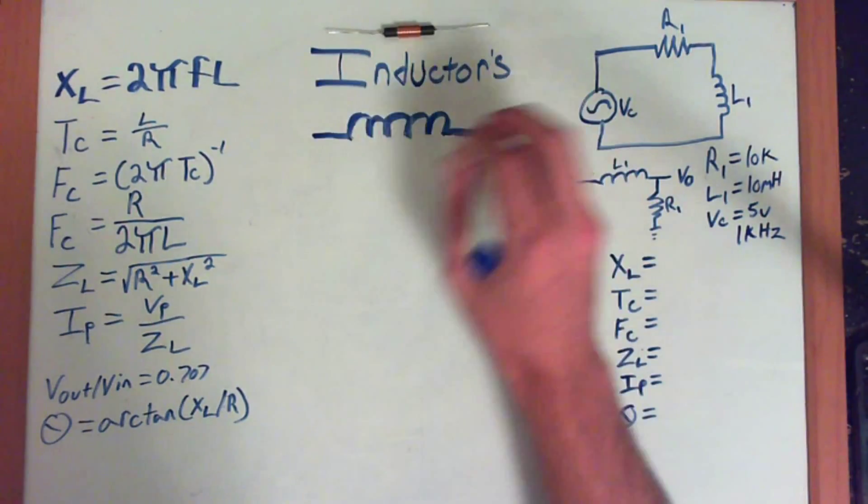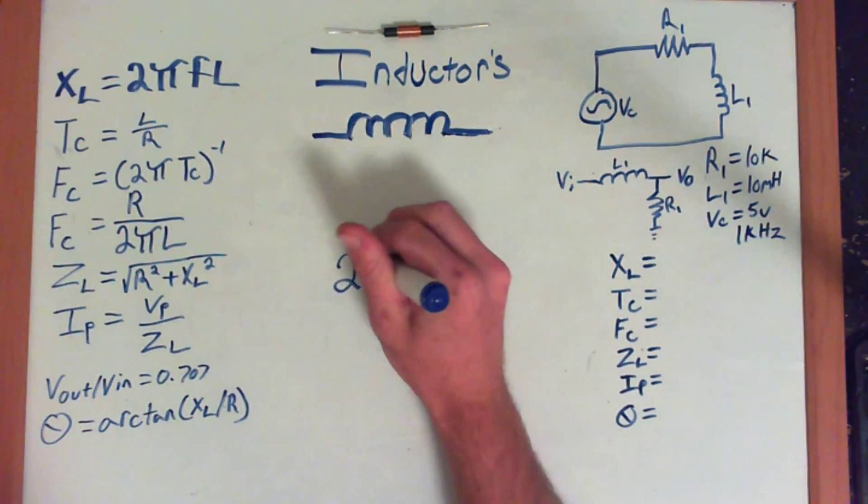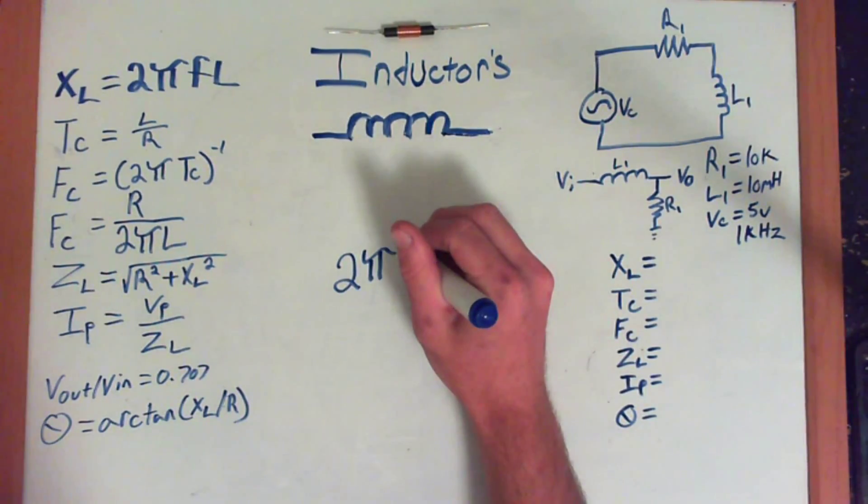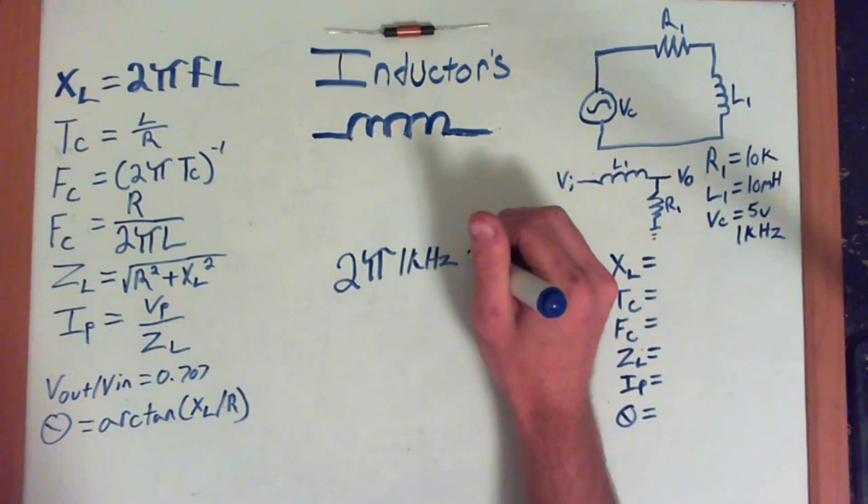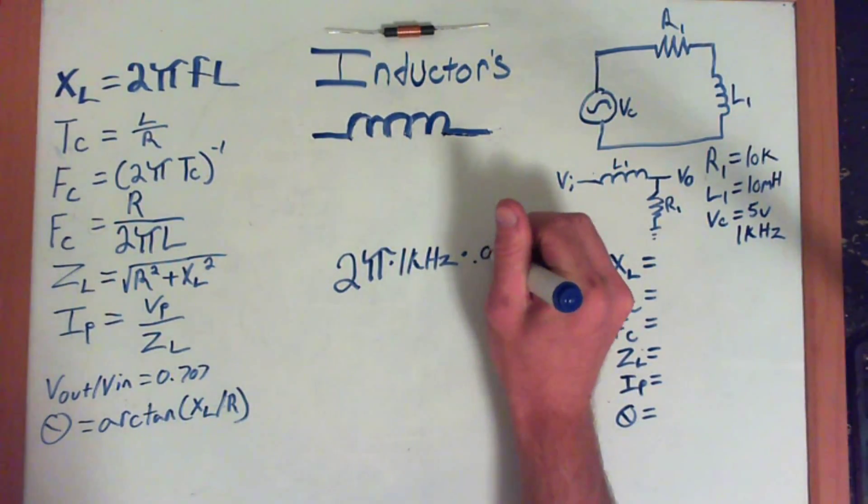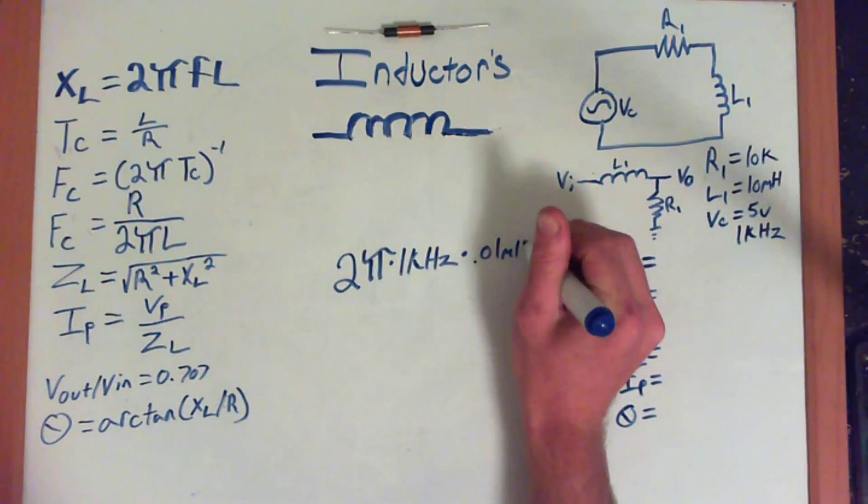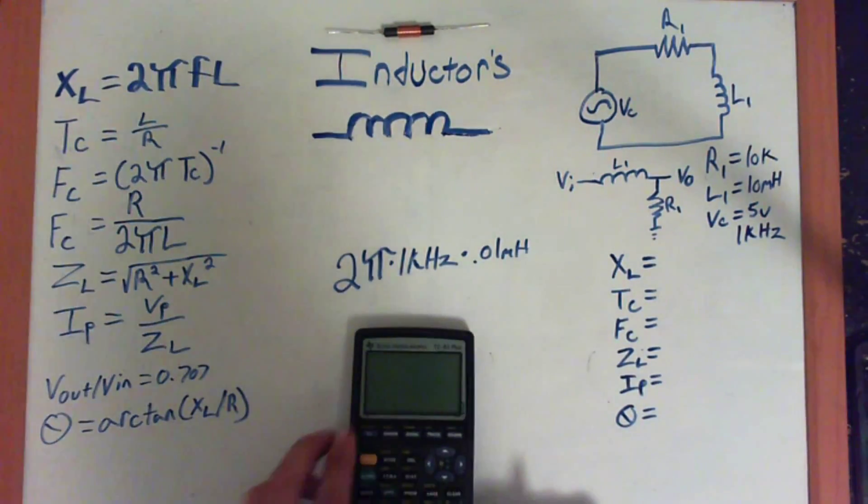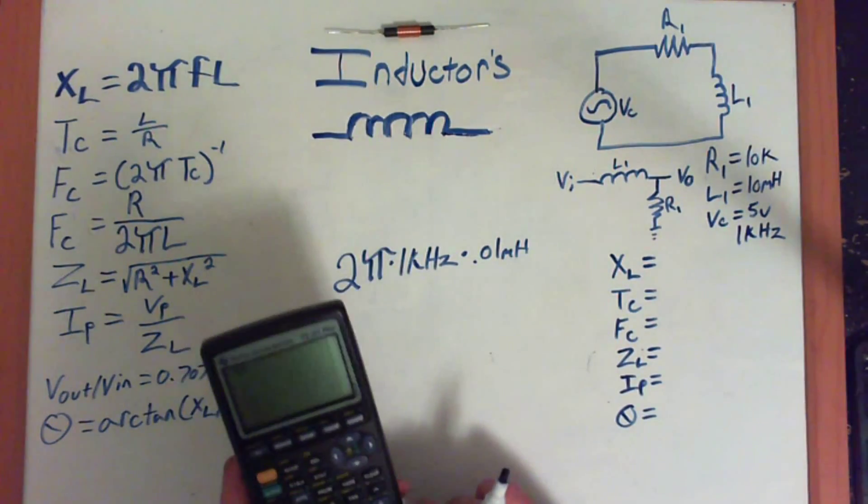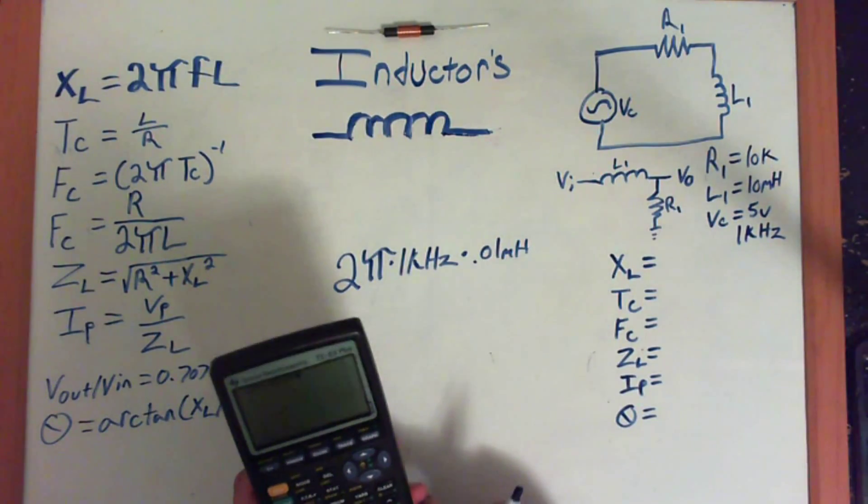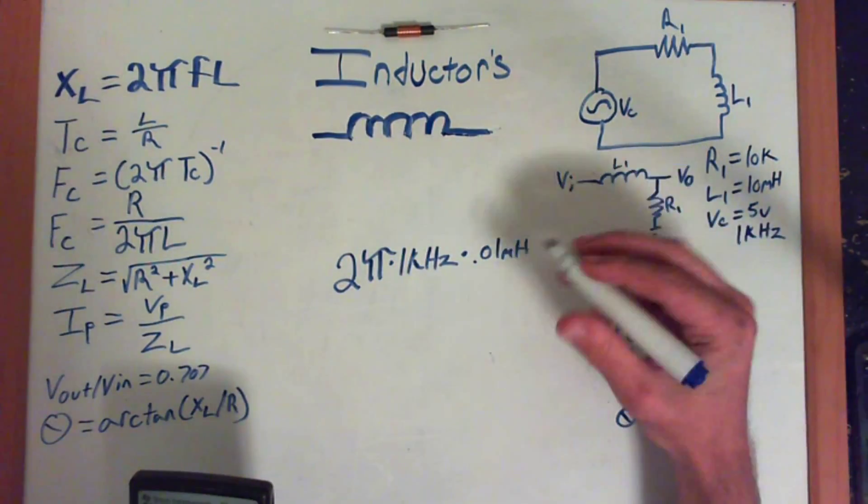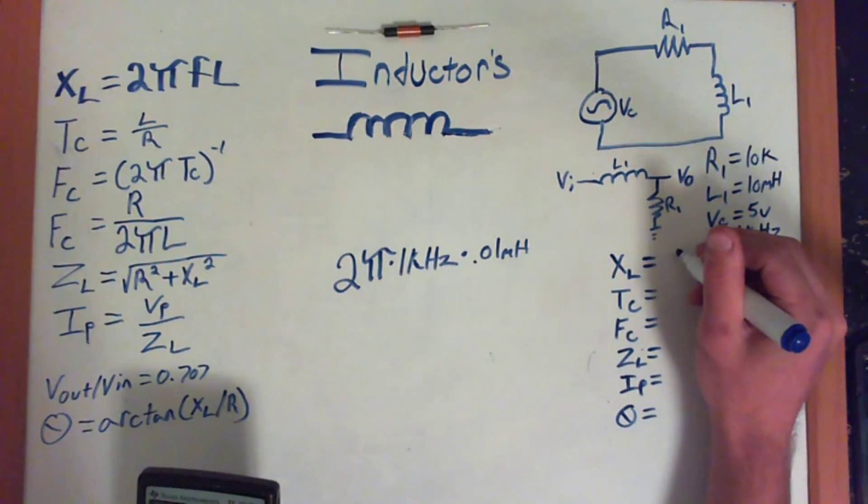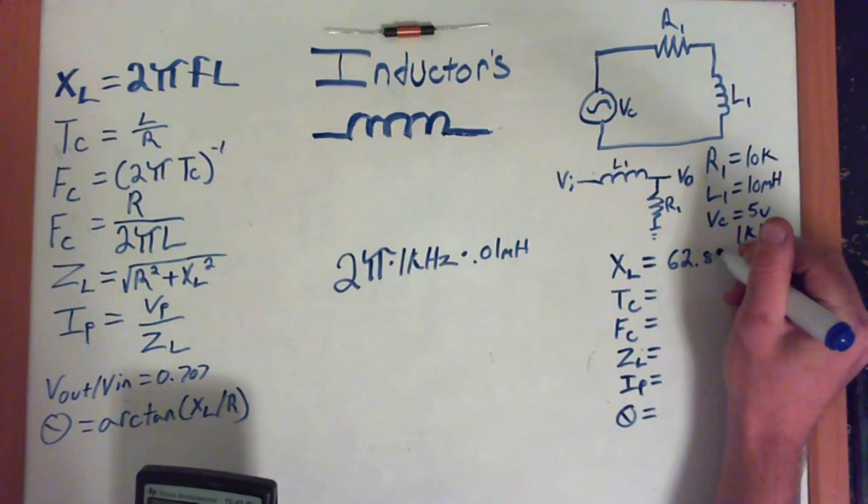So let's go ahead and input our values and solve for the XL. So it's going to be 2π times the frequency, which is just going to be 1 kHz, and then times our inductor, which is 10 mH, or 0.01 H. And let me punch that into the calculator and we'll see what we get. So 2π times 1000 times 0.01 equals 62.83. So our XL of this circuit at this frequency is going to be 62.83 ohms.